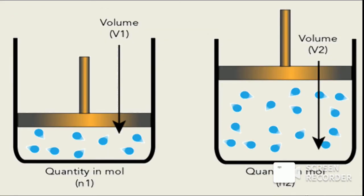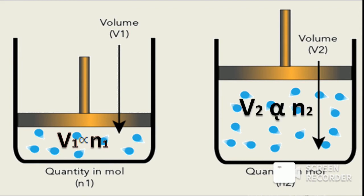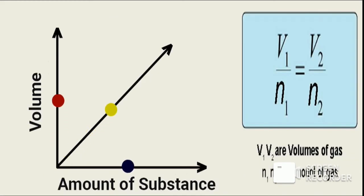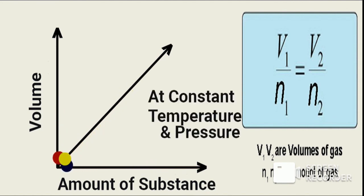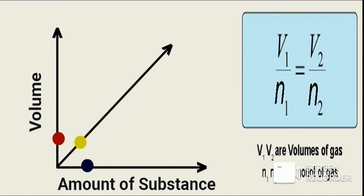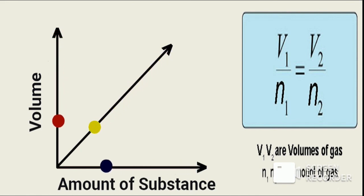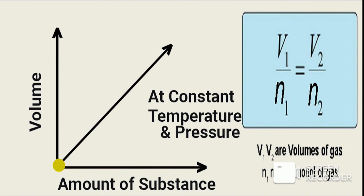Let us consider V1 as the volume occupied by a quantity of gas in moles N1, and V2 as the volume occupied by a quantity of gas in moles N2. Therefore, V1 is directly proportional to N1, and V2 is directly proportional to N2. Thus, V1 upon N1 equals V2 upon N2. At constant temperature and pressure, the volume of a gas is directly proportional to the amount of substance.